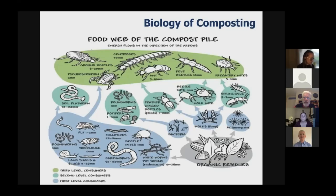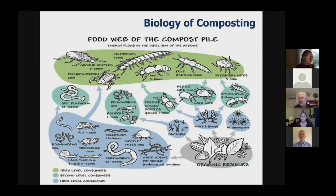This is a biological process, and we are farming. We can think of this as raising anything else — livestock, chickens, pets, dogs, even children. They need a balanced diet, and they need air and water, just like all of us. We can see from this picture of the food web of the compost pile that there are many organisms involved with composting.